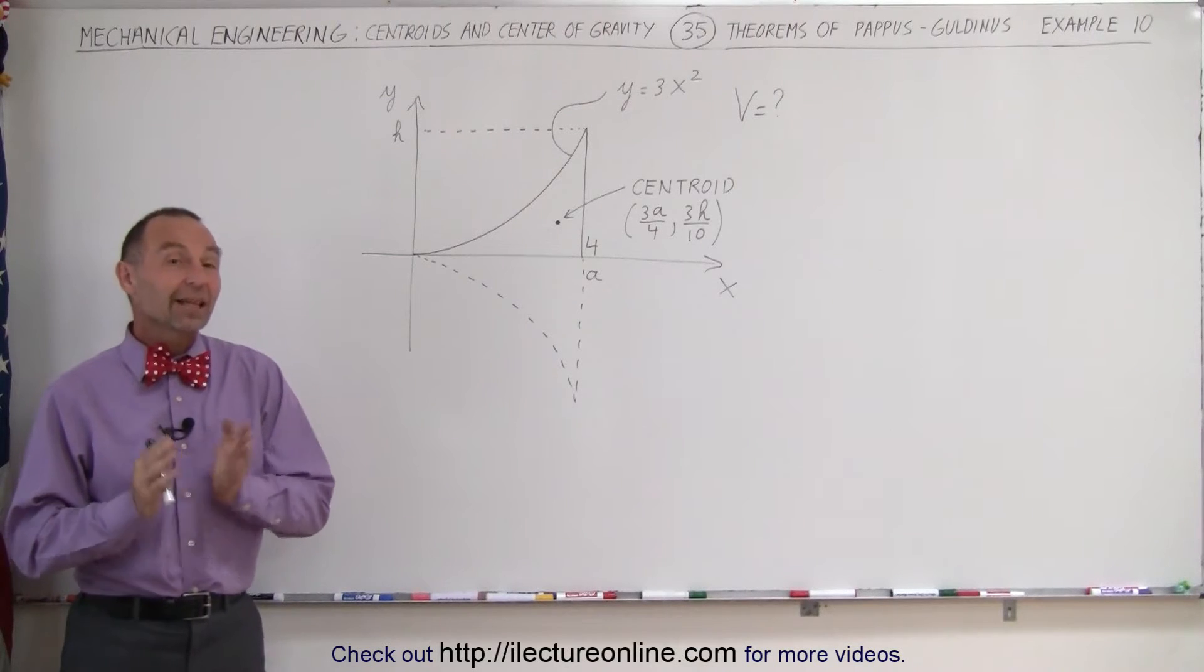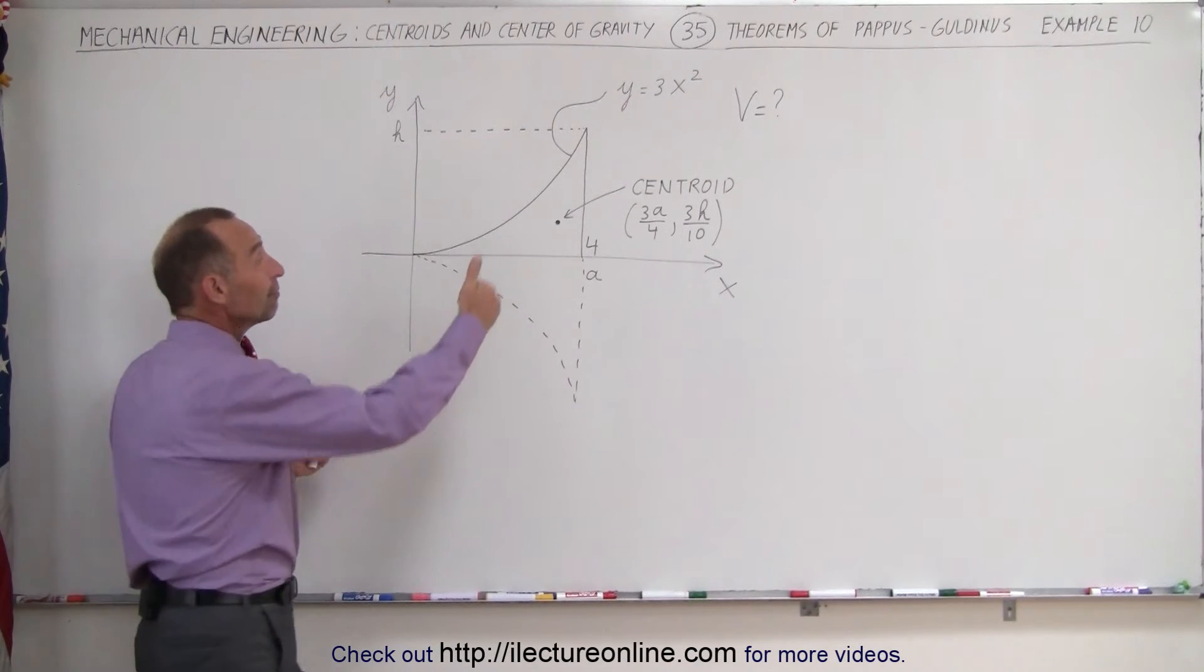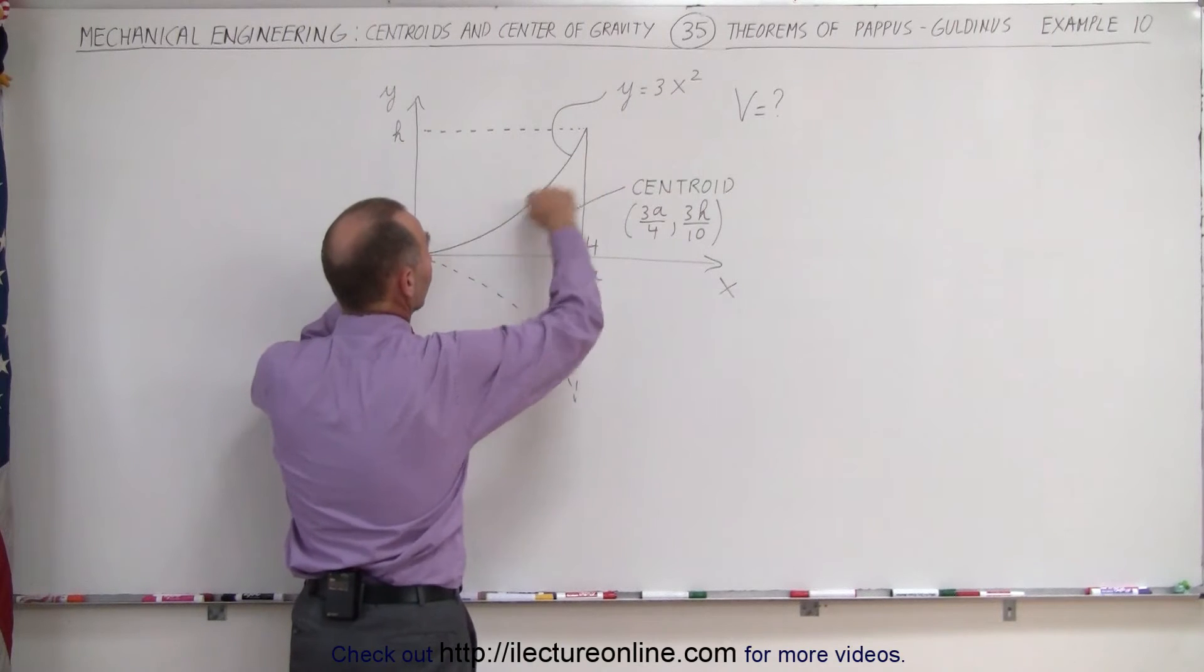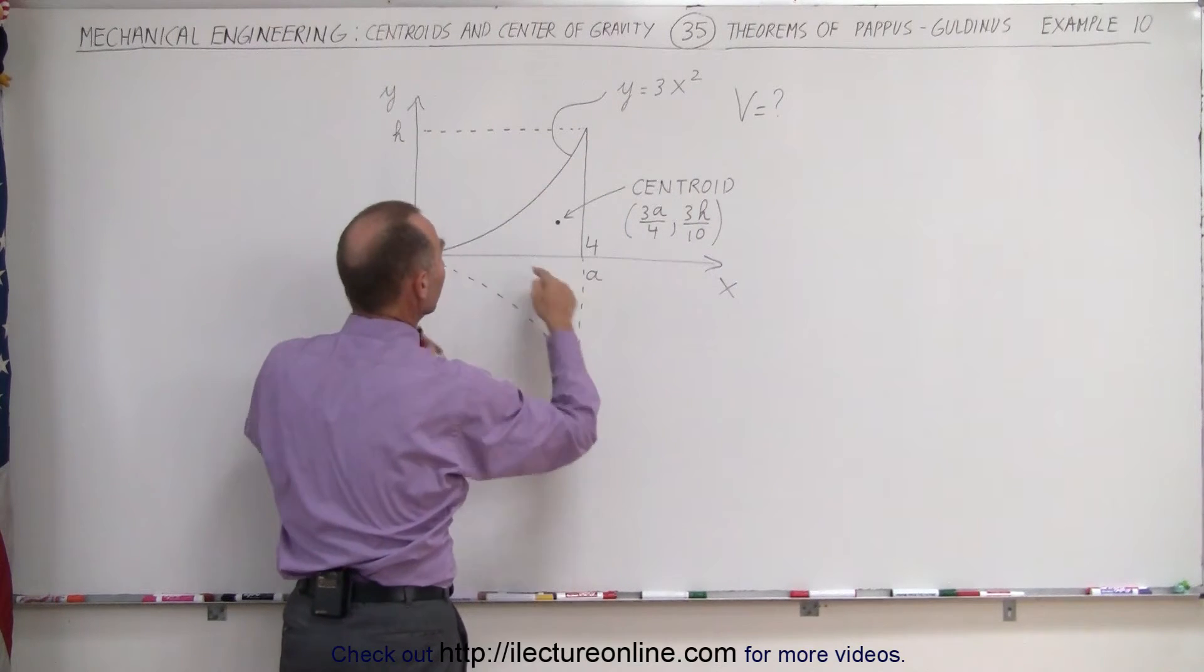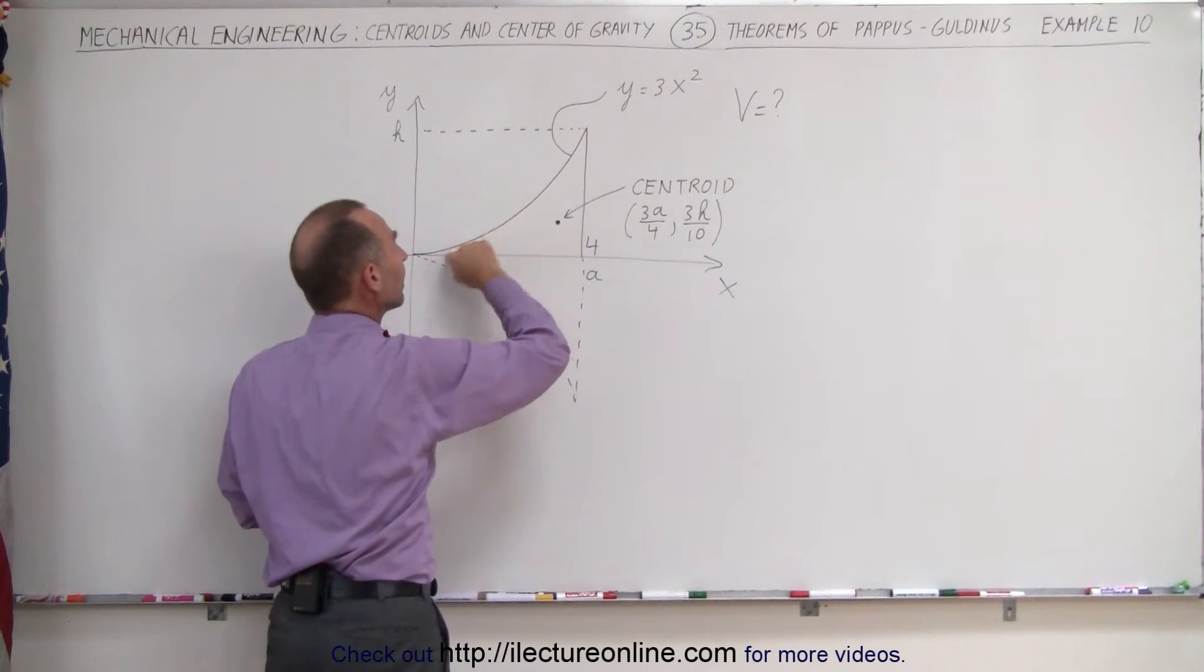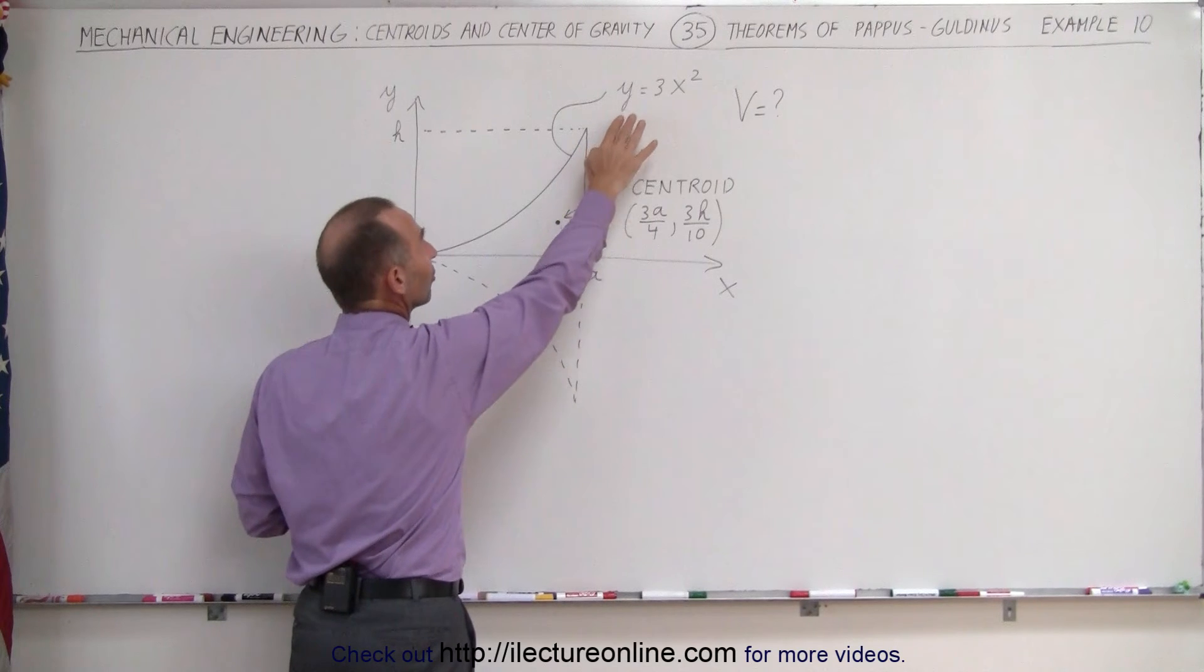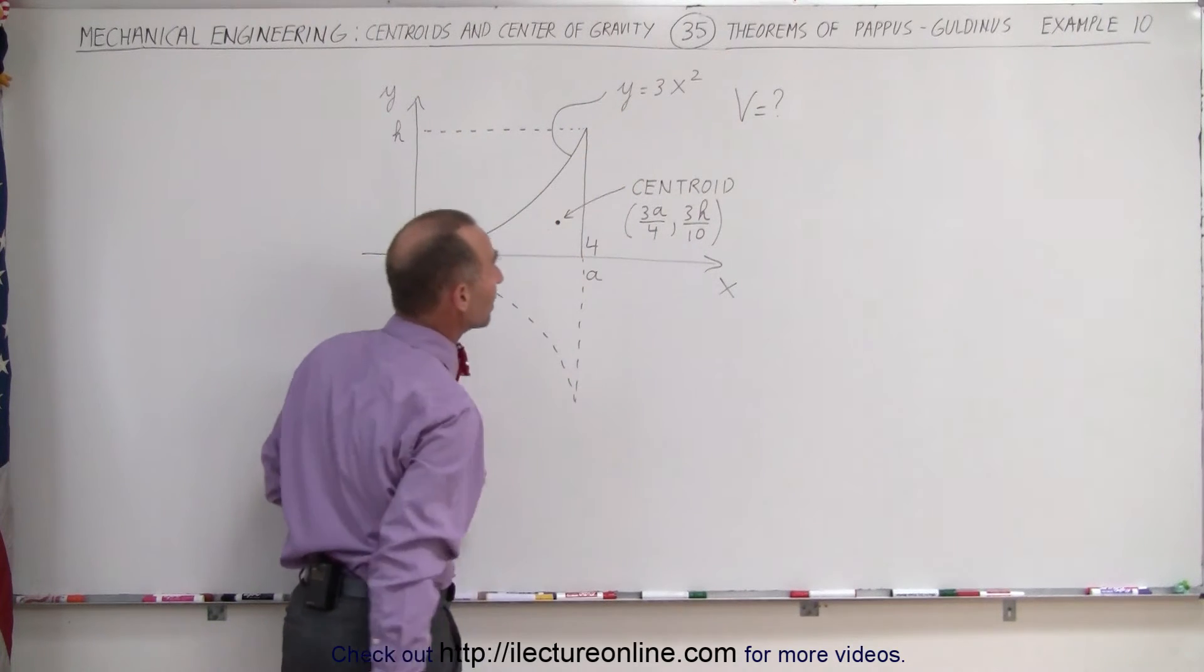Welcome to ElectronLine. In this example we're rotating or revolving a surface here about the x-axis. The surface is created by an equation. The equation in this case is a parabolic equation, y equals 3x squared.